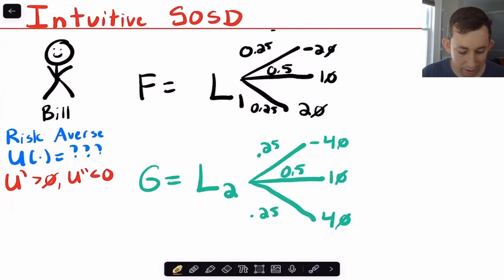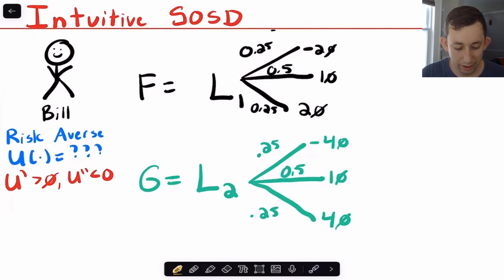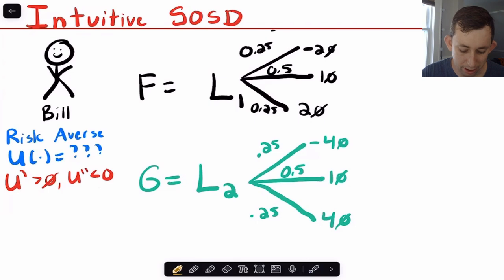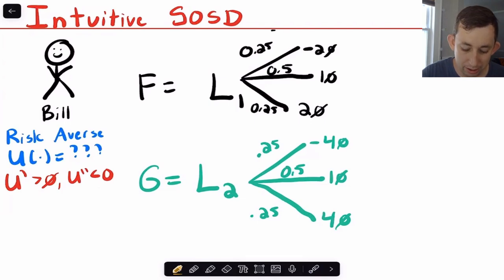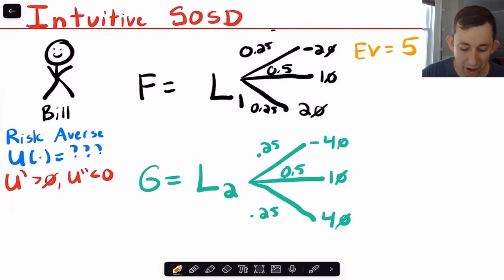So I've got two lotteries, F and G. You're asking Bill — any risk averse utility maximizer — which lottery he would pick. He looks at L1, which we're eventually going to represent with CDF F. He says: I've got a quarter chance of losing 20, a quarter chance of gaining 20, and a half chance of 10. Maybe I'll start by thinking about the expected value. The 20s cancel out, and I get an expected value of five.